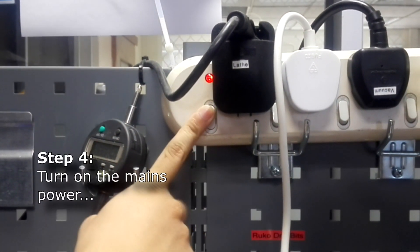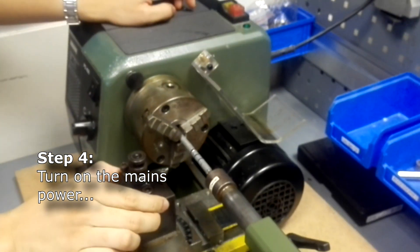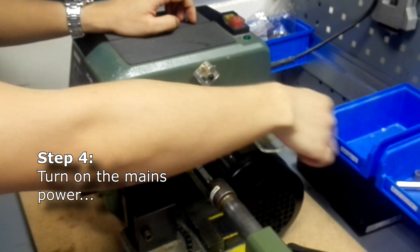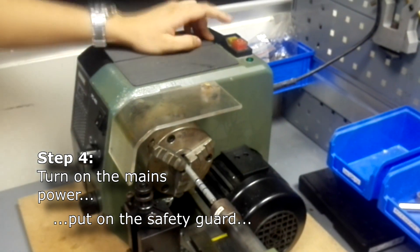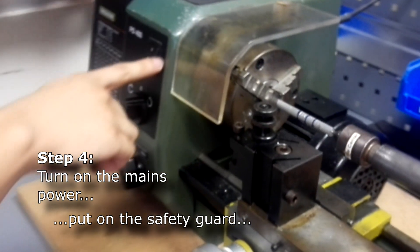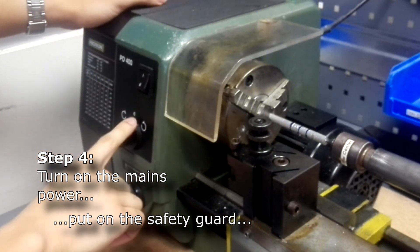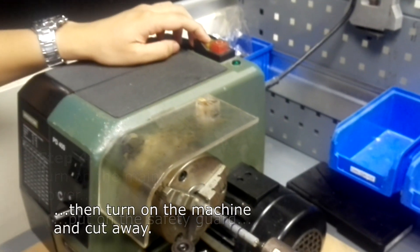Turn on the power supply for the lathe. Ensure that the blade holder is not in the way of the safety guard. Then put this on. Lastly, check that the settings for the speed and the direction are correct. Then turn on the switch.